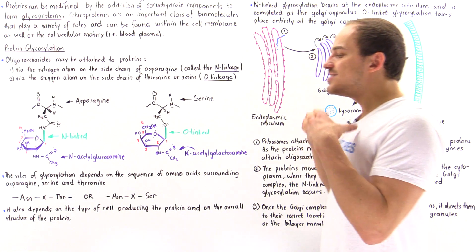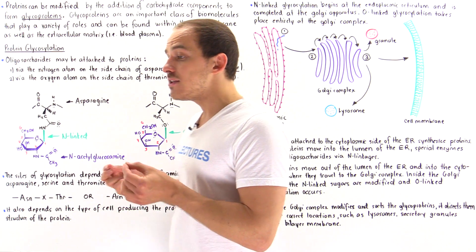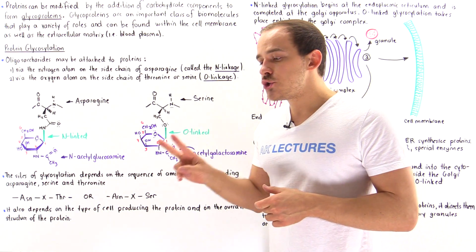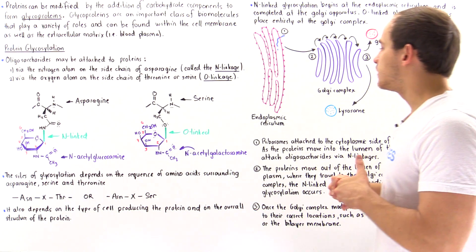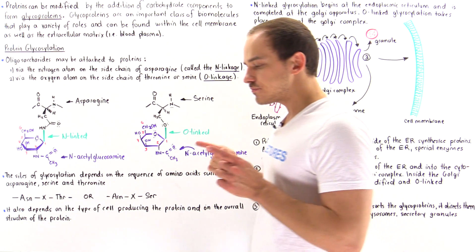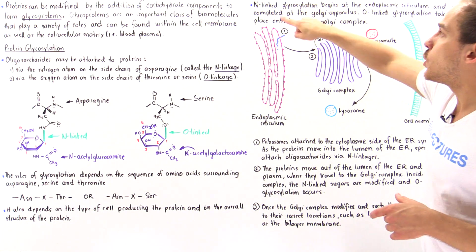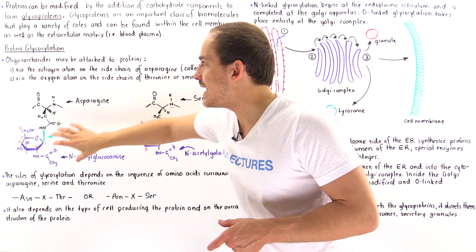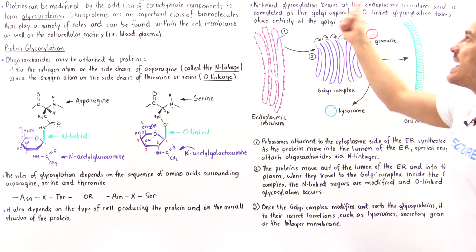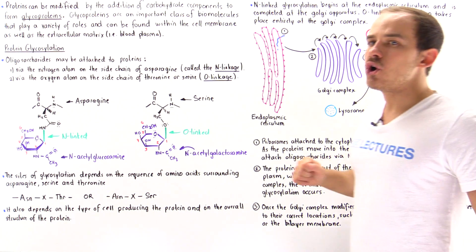Now, which organelles are responsible for protein glycosylation? There are two organelles that play a role: the rough endoplasmic reticulum and the Golgi apparatus. Within the endoplasmic reticulum, the N-linked glycosylation between asparagine and the respective oligosaccharide begins and is then completed at the Golgi apparatus. On the other hand, O-linked glycosylation is formed exclusively and entirely inside the Golgi apparatus.